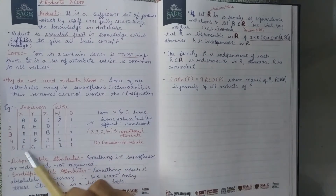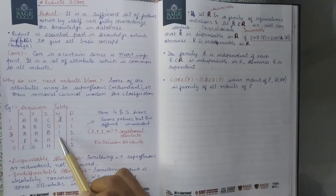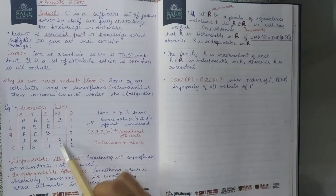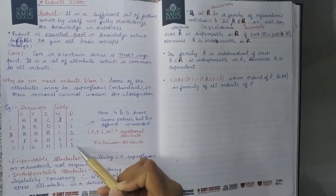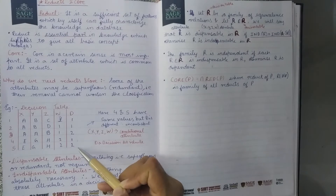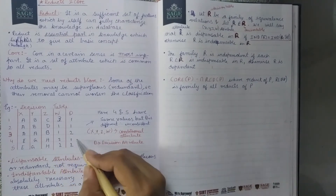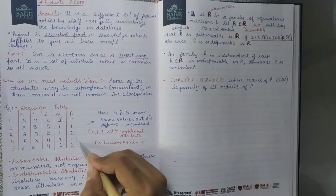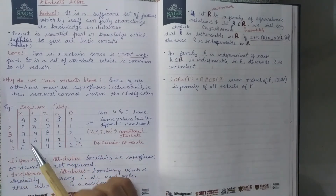We can see that for the 4th and 5th rows, the conditional attribute values are the same, but the decisions are 1 and 2 respectively — making them inconsistent. We can remove such redundant rows. We will use Reducts and Core to find and handle them.